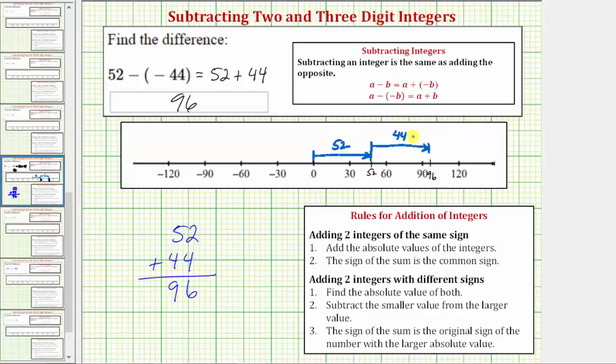52 plus 44 equals 96, and so does 52 minus negative 44. I hope you found this helpful.